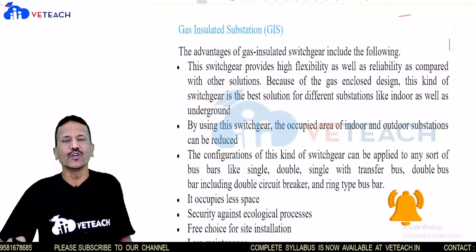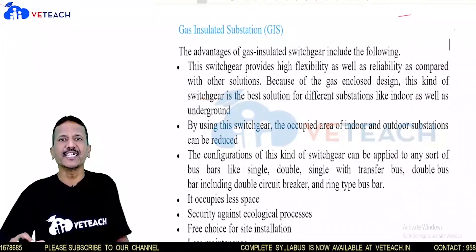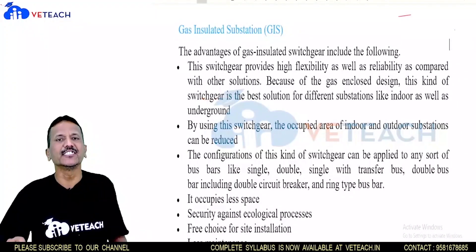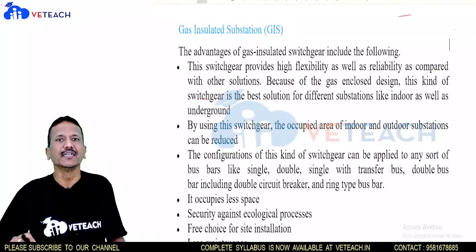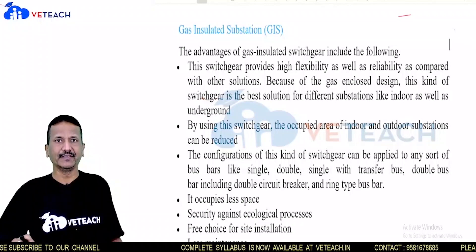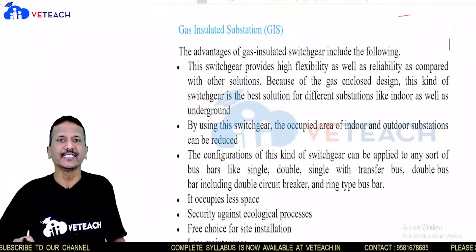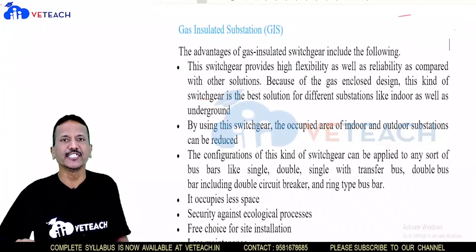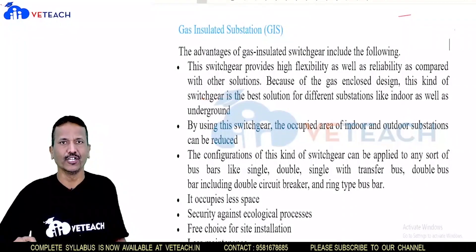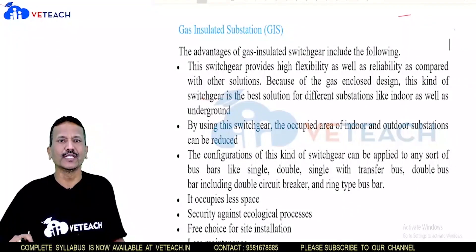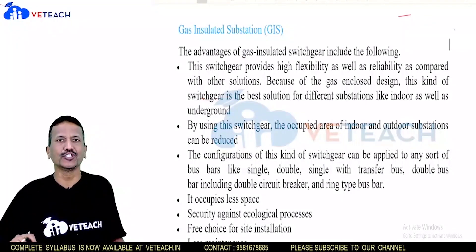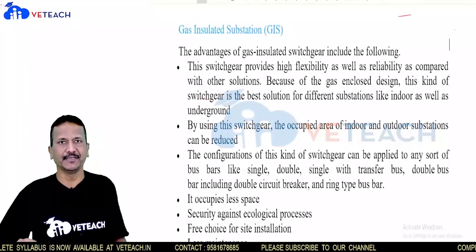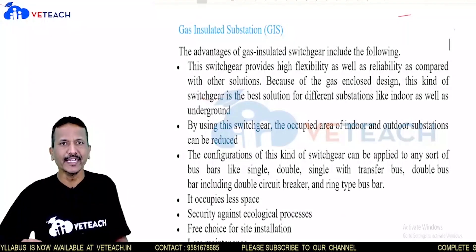GIS stands for gas insulated substation. The gas used is SF6 — sulfur hexafluoride — which acts as insulation to control faults, to control arcs, and to protect the system.